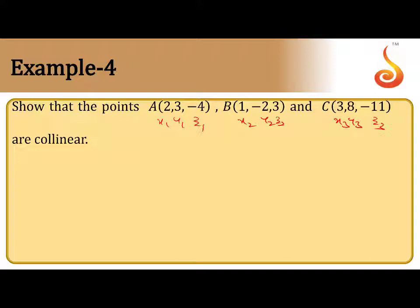Find DRs of AB. That is X2 minus X1, Y2 minus Y1, Z2 minus Z1. That you can take as A1, B1, C1.